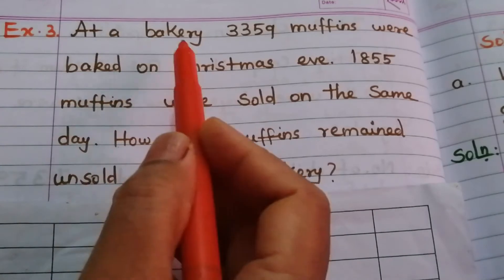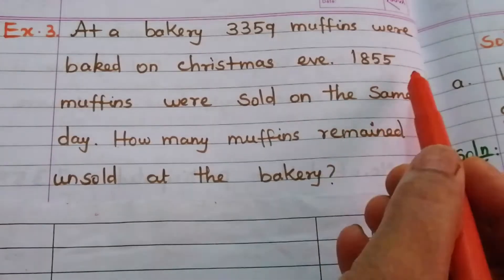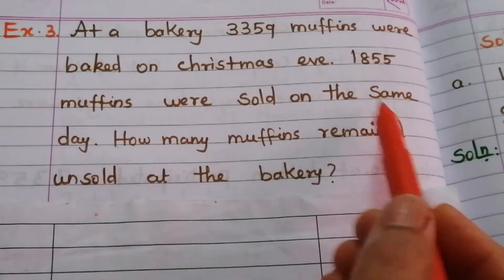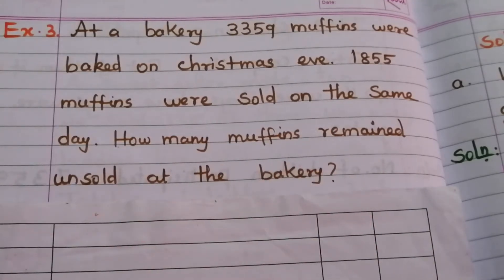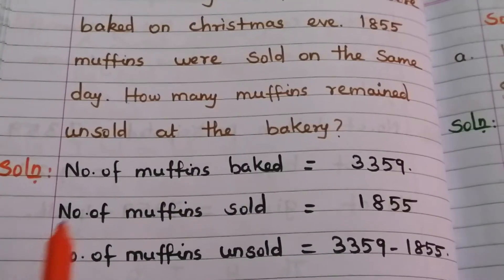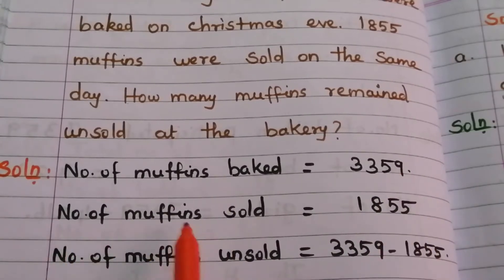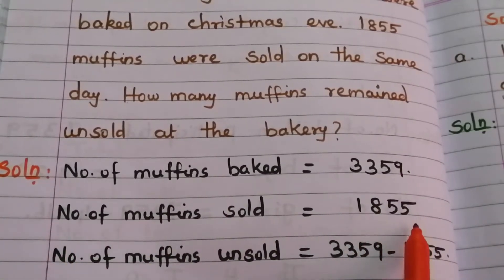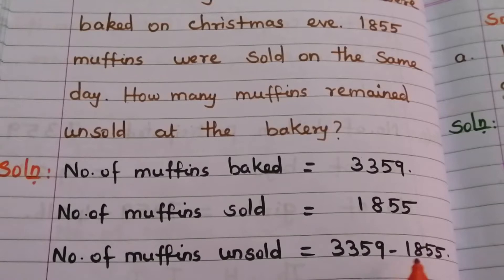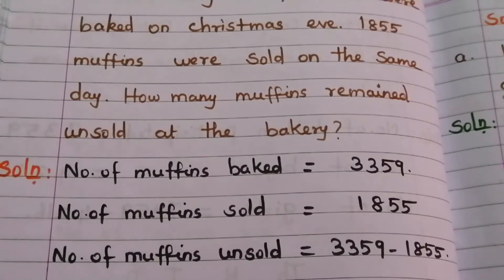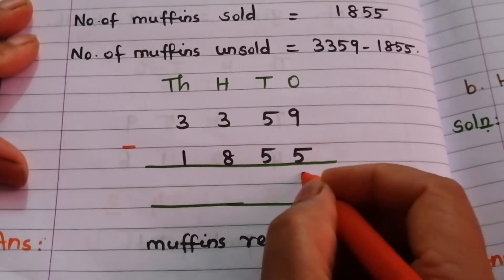Example 3: At a bakery, 3,359 muffins were baked on Christmas Eve. One thousand eight hundred fifty-five muffins were sold the same day. How many muffins remained unsold? Write down the given data: number of muffins baked = 3,359; number of muffins sold = 1,855. Number of muffins unsold = 3,359 minus 1,855. Start from the ones place: 9 minus 5 = 4, 5 minus 5 = 0.